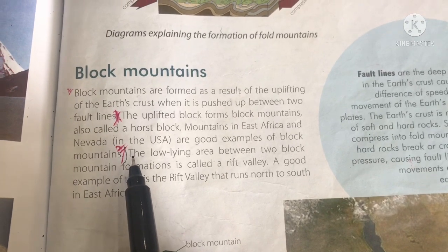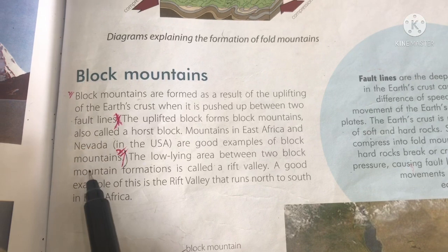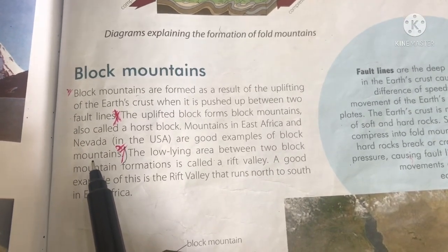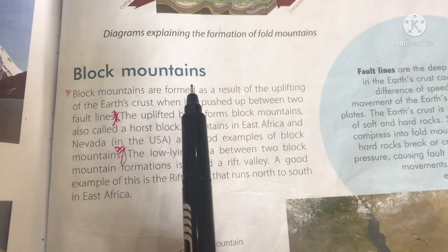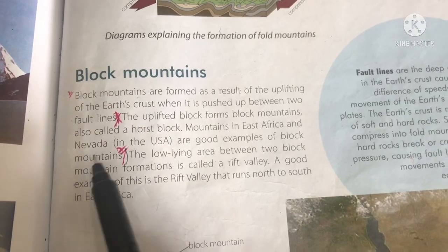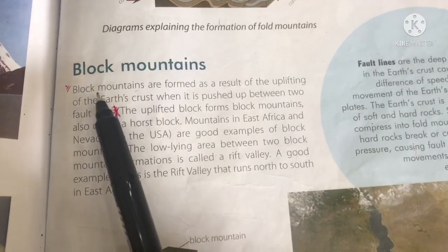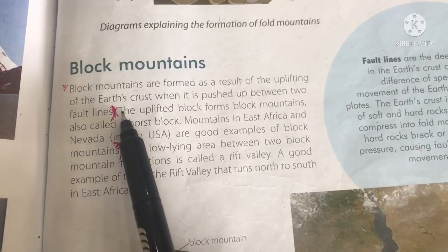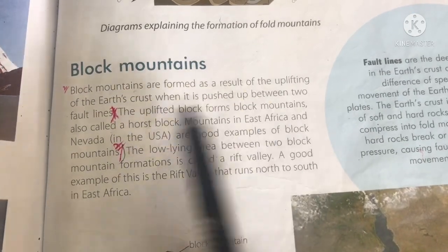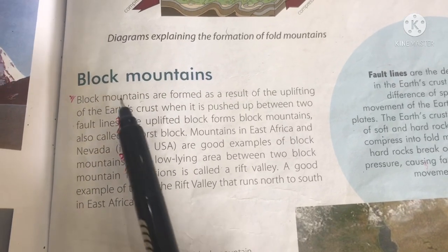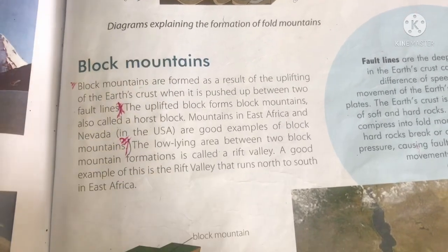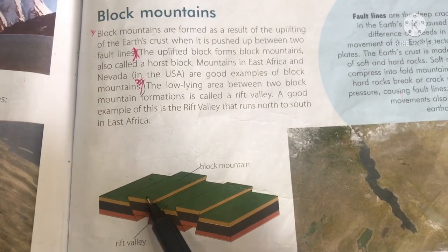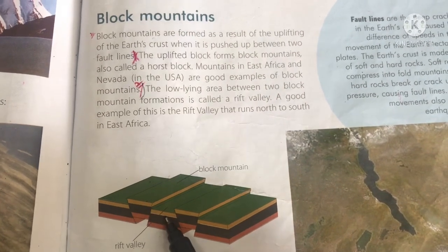Assalamualaikum students, I hope you all are fine. Today we are going to discuss the next type of mountain — block mountains. Block mountains are formed as a result of the uplifting of the earth's crust when it is pushed up between two fault lines.